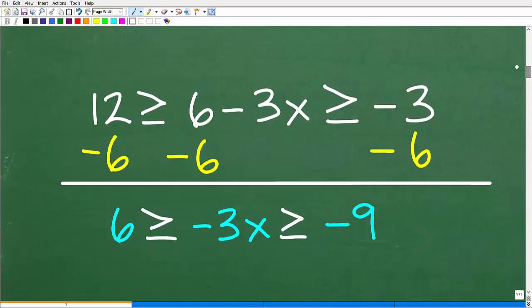The first thing we want to do is this. We have 6 - 3x in the middle. I want to get x by itself, just surrounded by these inequality symbols. So the first thing I need to do is get rid of this 6. So I'm going to subtract 6 from here, but I need to subtract 6 from both sides of the inequality.